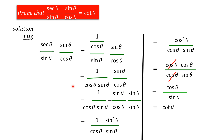What is the value of cos theta by sin theta? That is equal to cot theta. Looking at the right hand side of the question, we also have cot theta. Here, the left hand side has been converted into cot theta, so LHS equals RHS. Hence, it is proved.